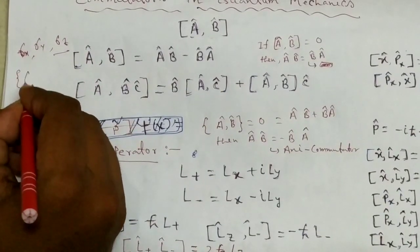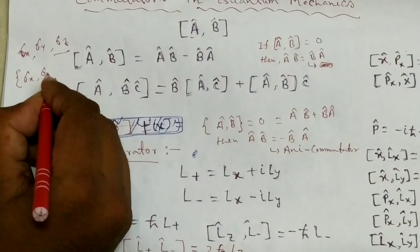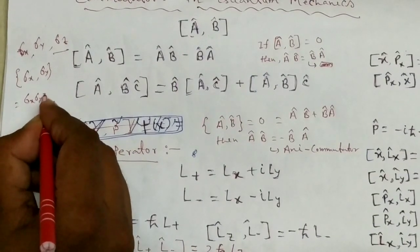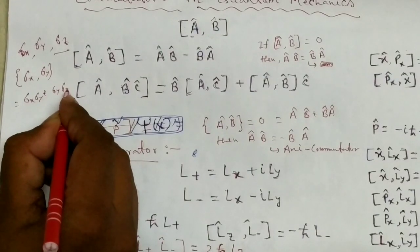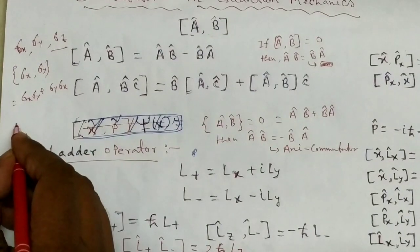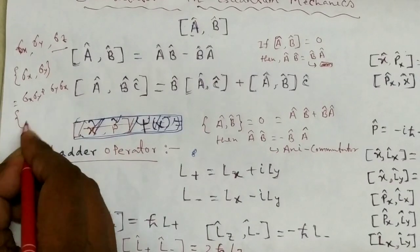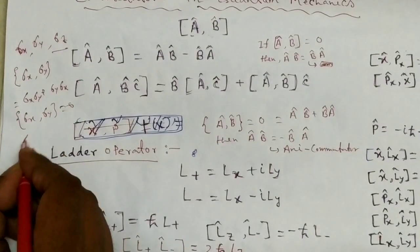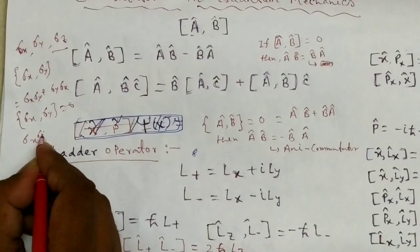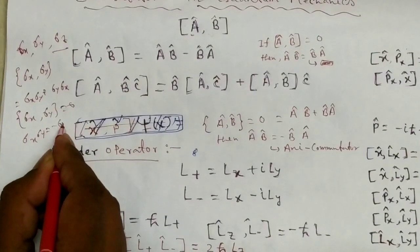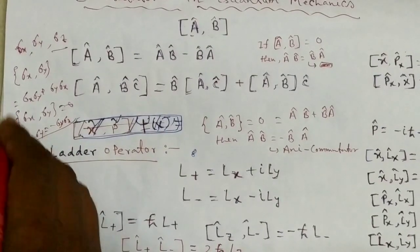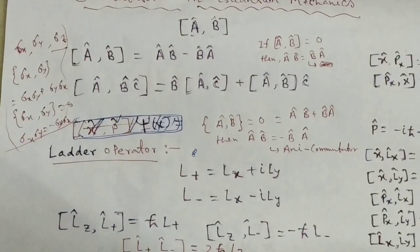For example, for the anti-commutator of sigma_x and sigma_y, we write {sigma_x, sigma_y} = sigma_x * sigma_y + sigma_y * sigma_x. For the anti-commutator, {sigma_x, sigma_y} = 0, so sigma_x * sigma_y = minus sigma_y * sigma_x. This is the example of the anti-commutator relation.